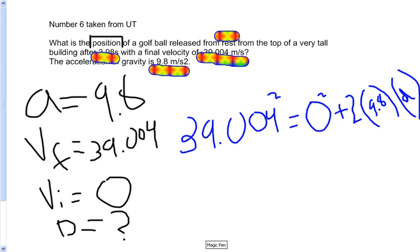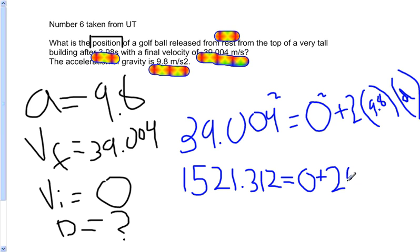Okay. Now let's simplify it. Okay, so 39.004 squared is 1521.312 equals 0 plus 2 times 9.8 times d, or x.